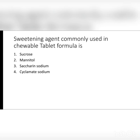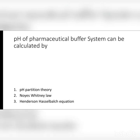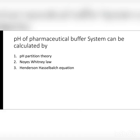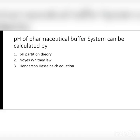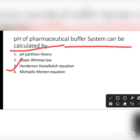Option number 2: the pH of a pharmaceutical buffer system can be calculated by — options are pH partition theory, Noyes-Whitney law, Henderson-Hasselbalch equation, or Michaelis-Menten equation. The right answer is: pH of a pharmaceutical buffer system can be calculated by the Henderson-Hasselbalch equation.